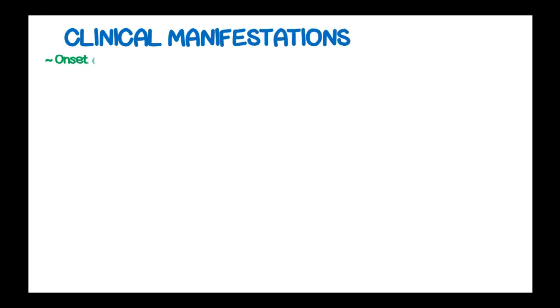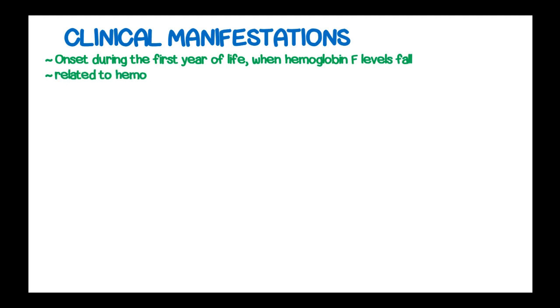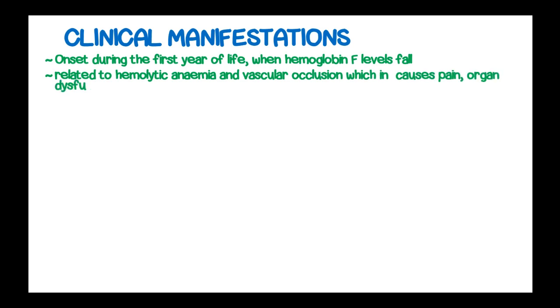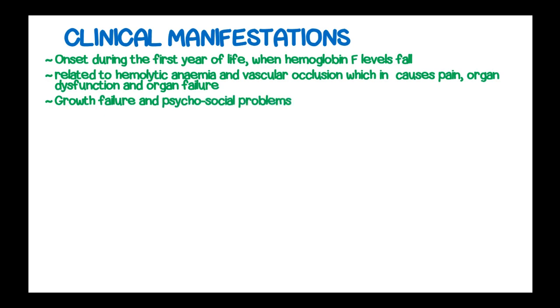The clinical features of sickle cell disease occur in the first year of life when the levels of hemoglobin F fall. They are related to hemolytic anemia and vascular occlusion, which in turn causes pain, organ dysfunction, and organ failure. Growth failure and psychosocial problems can also be present in these patients.